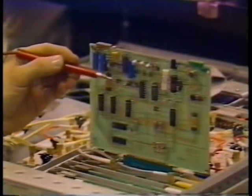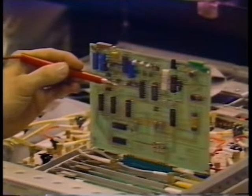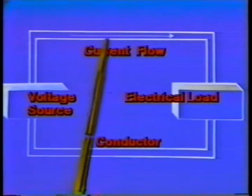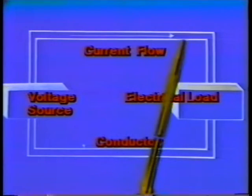An electrical system is usually a circuit. The charge comes from a source, then voltage moves it along a conductor, which carries it to a device that uses the electricity, like a toaster, for example. Then the conductor carries the charge back to the source to complete the circuit.